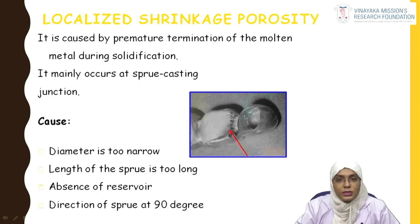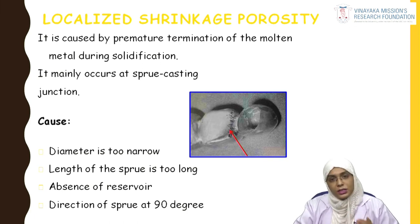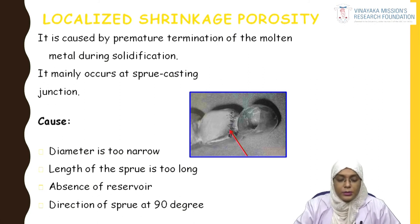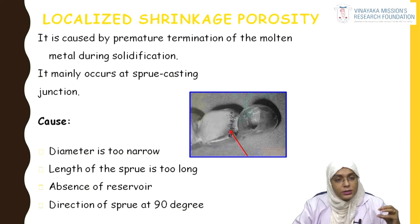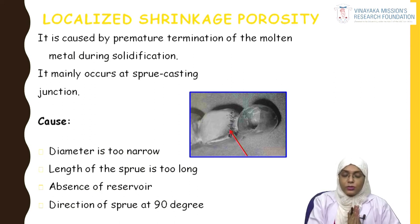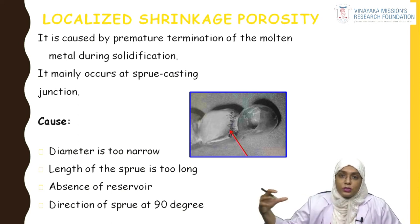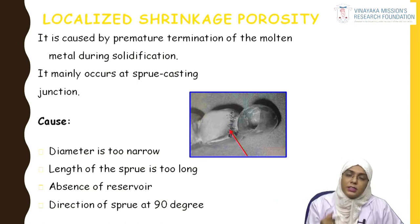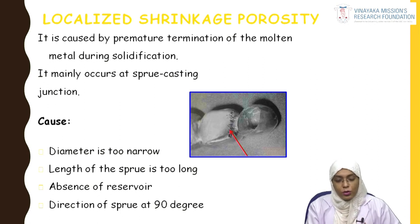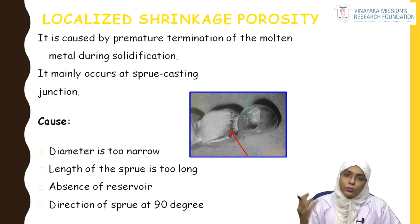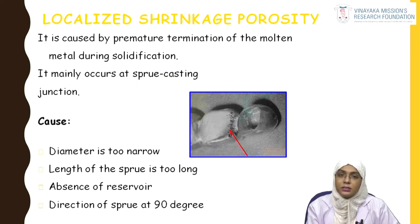The first solidification defect is localized shrinkage porosity, caused by premature termination of molten metal flow during solidification. It occurs when the sprue diameter is too narrow or the sprue length is too long — the molten metal solidifies before reaching the wax pattern. It also occurs when there is no reservoir, when there is insufficient molten metal to flow into the entire wax pattern, or when the sprue is at 90 degrees, causing increased force that may distort the sprue.